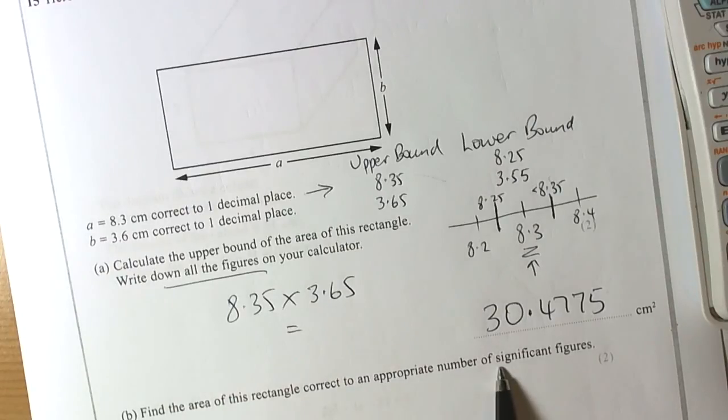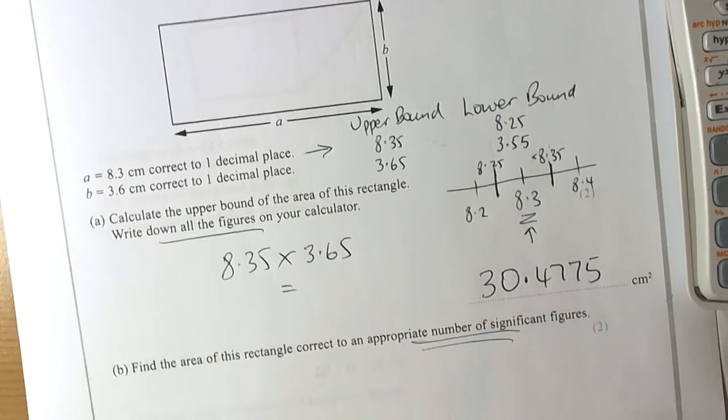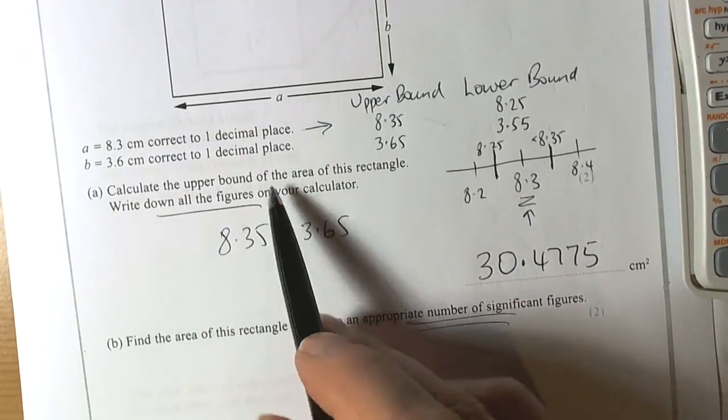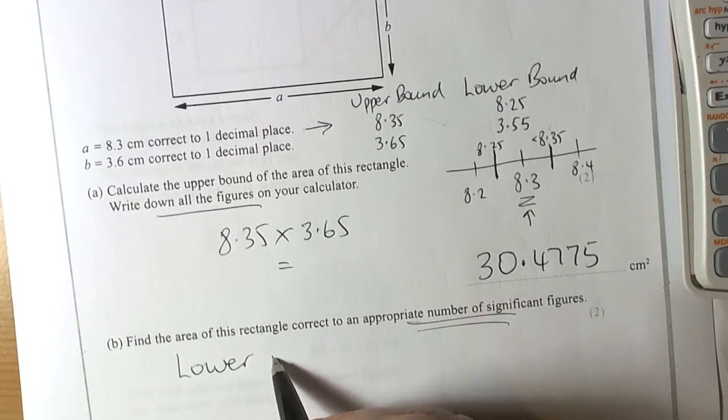It says find the area of the rectangle correct to an appropriate number of significant figures. Well, they're giving you a clue here that they've already asked you to calculate the upper bound. So you also need the lower bound.